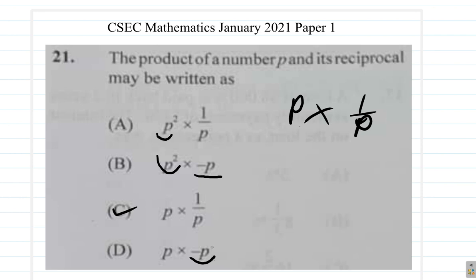The reciprocal of P is not minus P. The reciprocal of P is 1 over P or divided by P. So C is the answer for question 21.